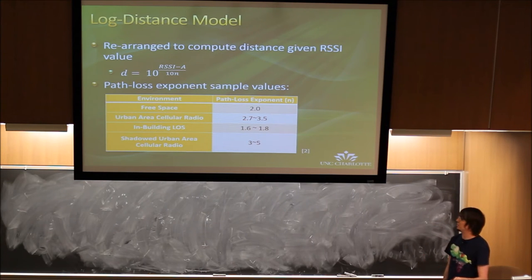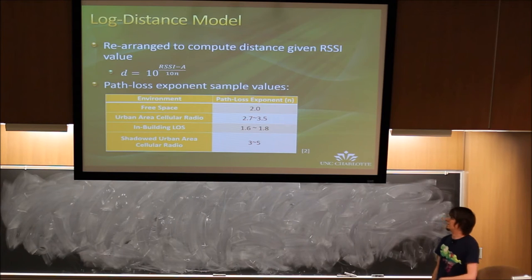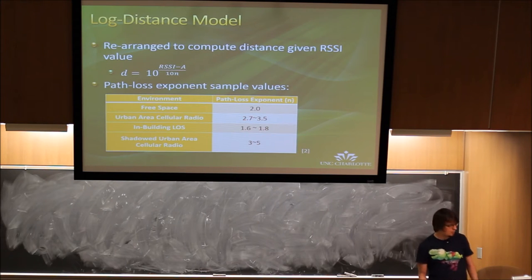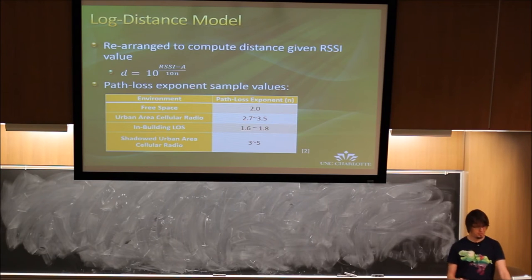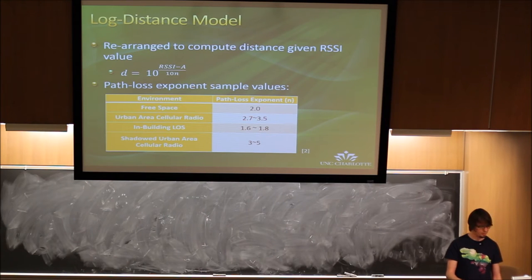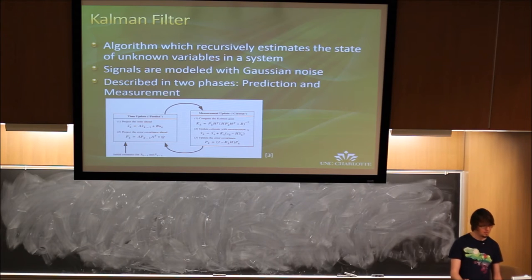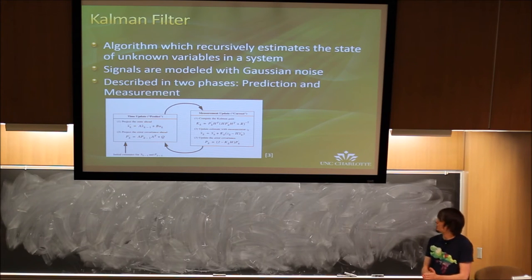For configuring the log distance model, the best way is to rearrange the formula to get distance out of it: distance = 10^((RSSI − A) / (10 × n)). I have a table here with path loss exponent sample values for different indoor environments — free space, urban area, highly shadowed (very reflective) environments, and in-building line of sight. Generally you take around two for most indoor environments.